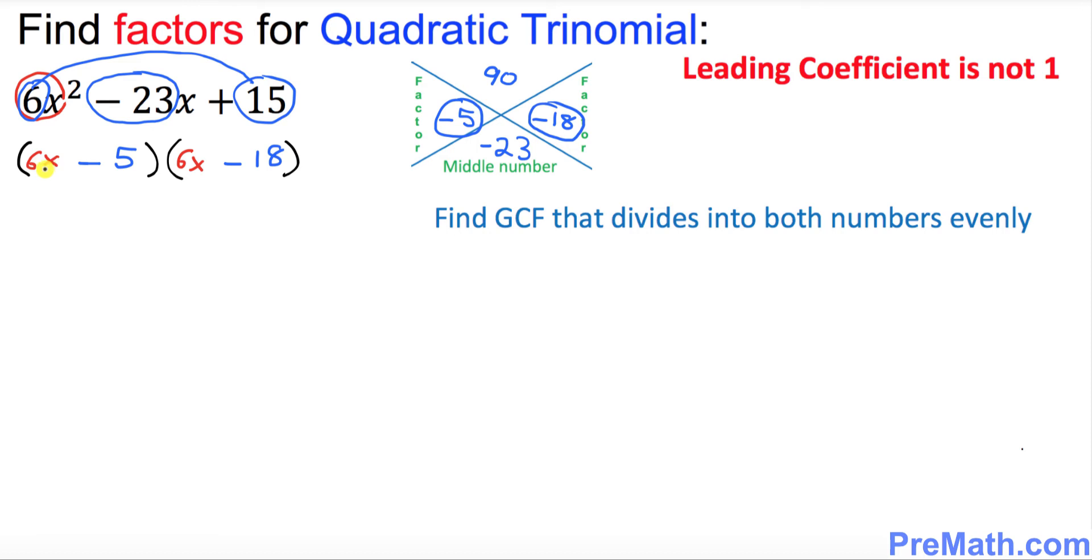Focus on the very first parentheses. The numbers are 6 and 5. Since there's nothing in common, just leave it alone. Look at the second parentheses which has number 6 and 18. Find the GCF, that means the biggest largest number that divides into both of them at the same time.